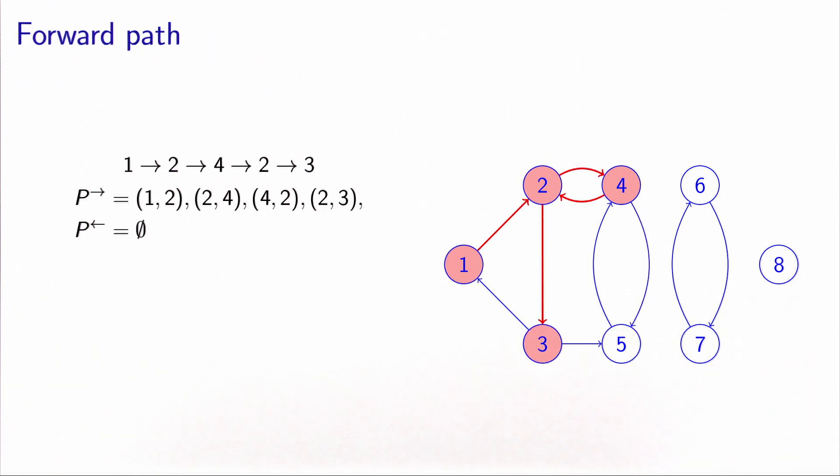The next example is a forward path, which is not simple. In this case, the path is starting from node 1, going to node 2, going to node 4, coming back using this arc to node 2, and then going to node 3.